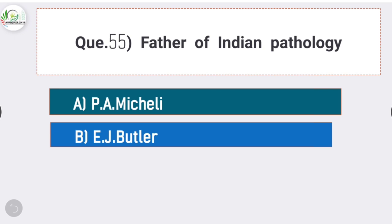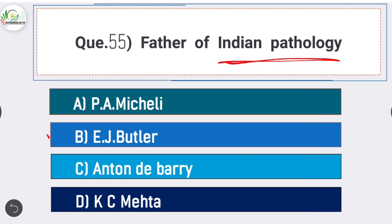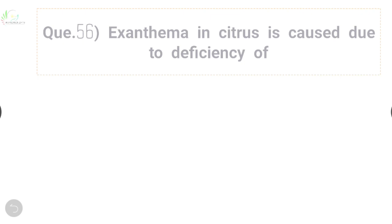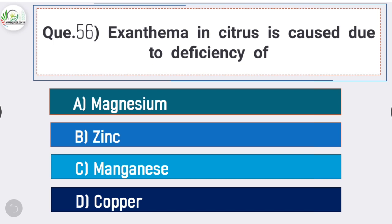Question number fifty-five: Father of Indian Pathology is - answer is option B - E.J. Butler. E.J. Butler is known as Father of Indian Pathology. Question number fifty-six: Exanthema in citrus is caused due to the deficiency of - answer is option D - copper. Exanthema in citrus is caused due to the deficiency of copper.